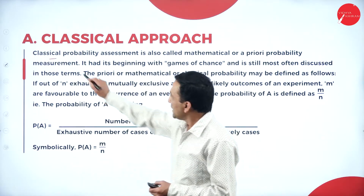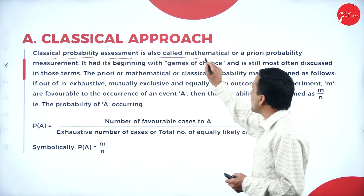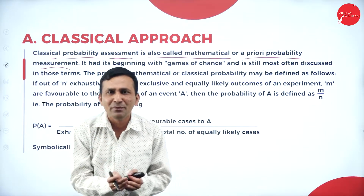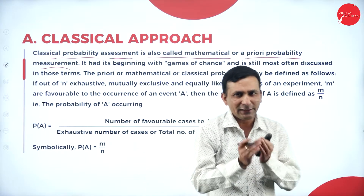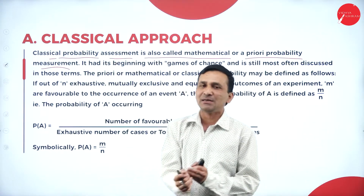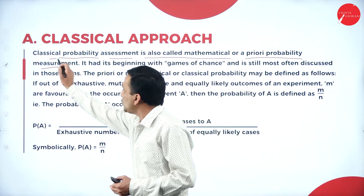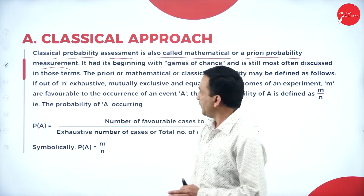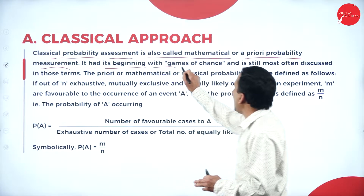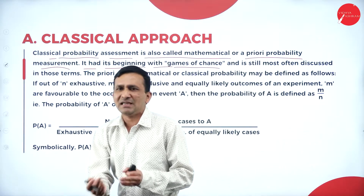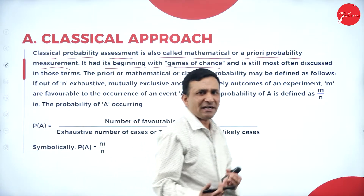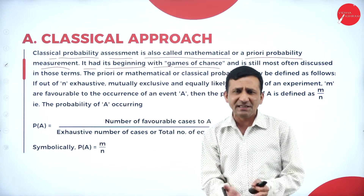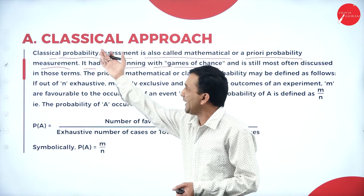Once again I am recalling here. The classical probability assessment is also called mathematical — or a priori probability measurement — because when the samples are a finite number, countable numbers, it is related to classical probability distribution. So when you are trying to solve a problem related to classical probability, it begins with the game of chance.